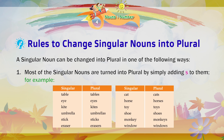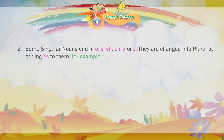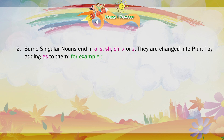Some singular nouns end in O, S, SH, CH, X or Z. They are changed into plural by adding ES to them.